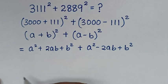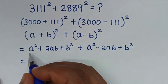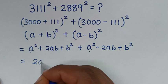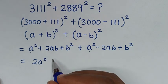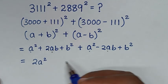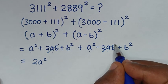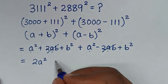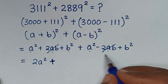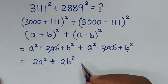Then, in the next step, it will be equal to: a squared plus a squared is 2a squared, and this 2ab minus 2ab is 0, so these two terms will cancel, and then b squared plus b squared is 2b squared.